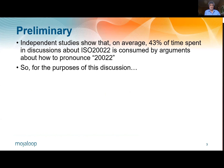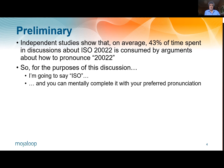Preliminary: independent studies show that, on average, 43% of time in these discussions is spent arguing about how to pronounce 20022. So for the purposes of this discussion, I'm just going to say ISO, and you can mentally complete it with your preferred pronunciation. And that's going to save us 17 minutes right there.